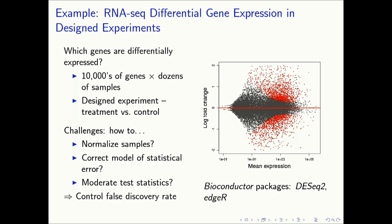All of these challenges need to be addressed if we're to effectively control the false discovery rate. This set of challenges has been well-developed within the Bioconductor community, and there are a number of packages that facilitate straightforward, statistically informed analyses of RNA-seq differential expression, packages such as DESeq2 and EDGE-R.